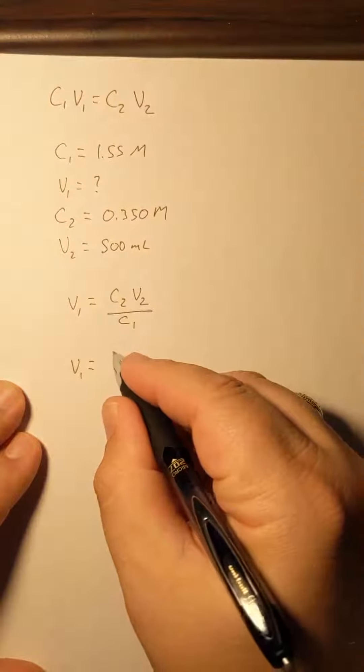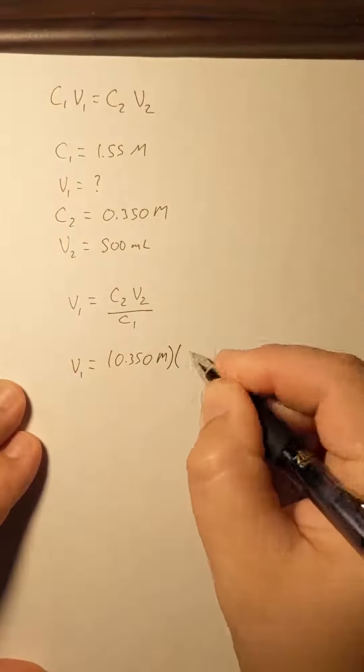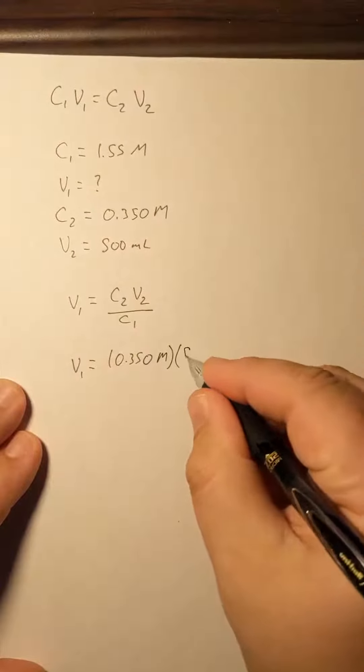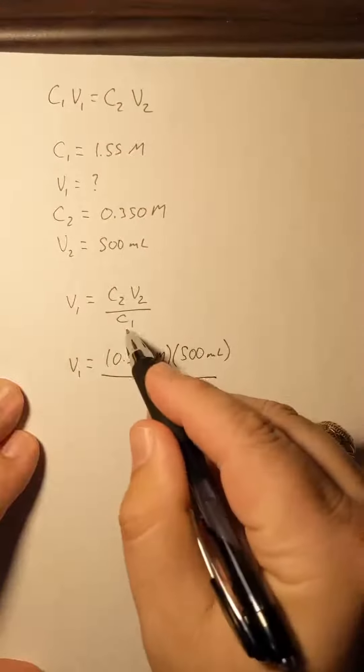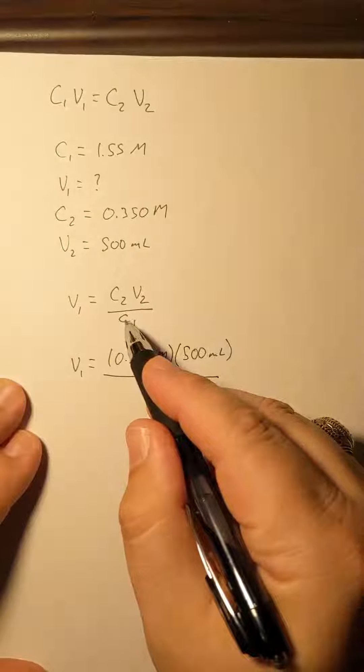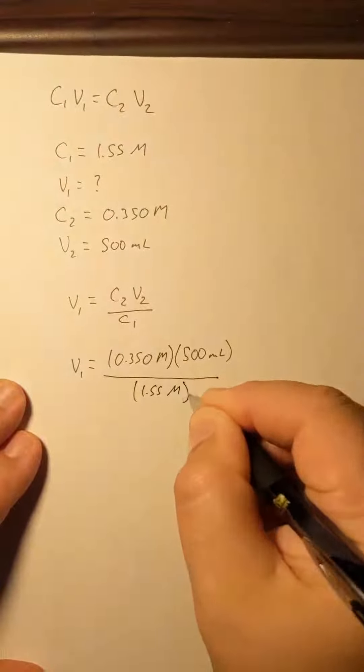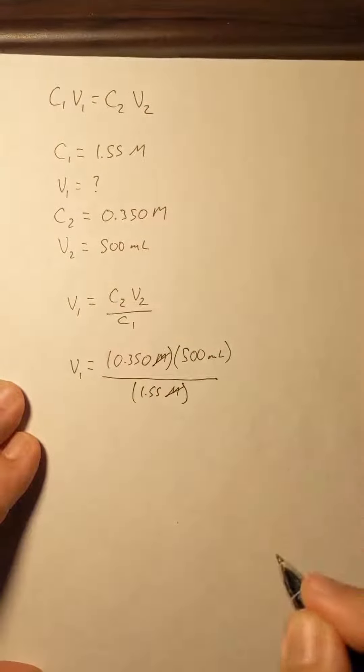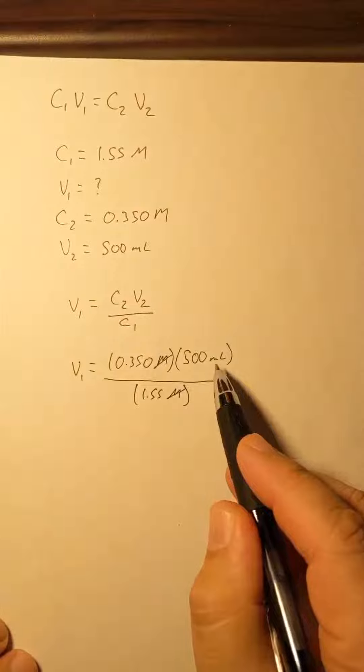So V1 is going to equal 0.350 moles per liter times V2, 500 milliliters, over our concentration from C1, 1.55 moles per liter. Our molarities will cancel out, and I'm going to be left with a final answer in units of milliliters.